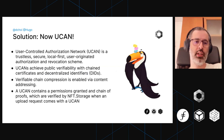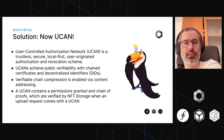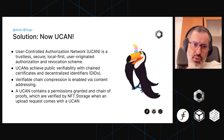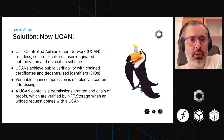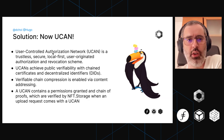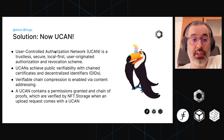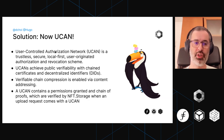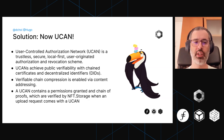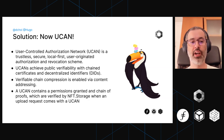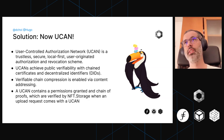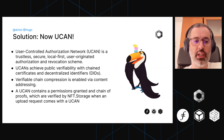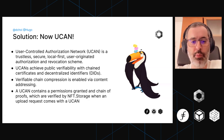The solution we are implementing is UCANs — User Controlled Authorization Network. The spec for this was made by Fission, and we contributed to the spec and are collaborating on the whole UCAN ecosystem. UCANs are trustlessly secure, local-first, user-originated authorization and revocation schemes. They achieve public verifiability with chain certificates and decentralized identifiers (DIDs), and we can have verifiable chain compression using content addressing and CIDs directly.